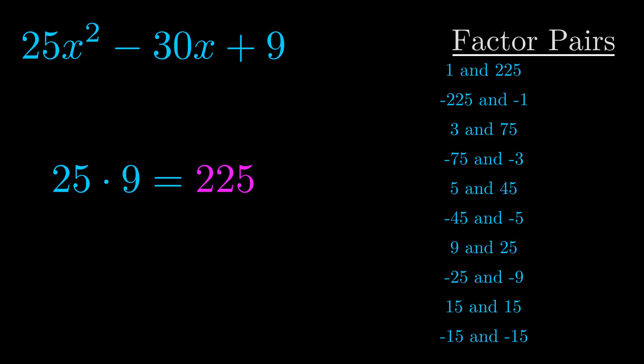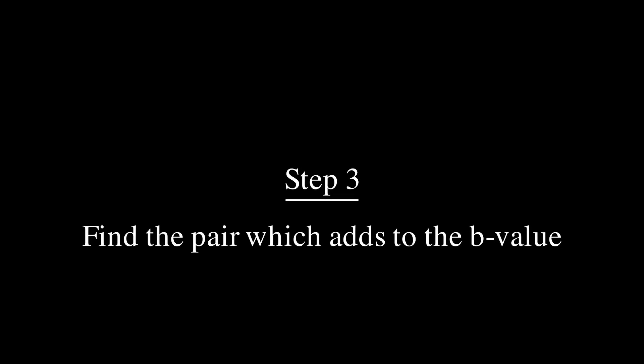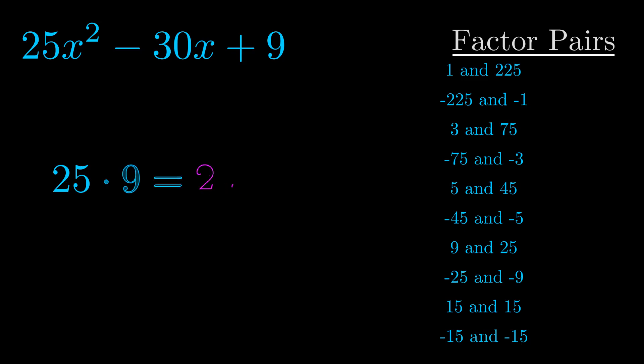Now once you have these factor pairs the goal is to find which of these pairs adds to the b value. The b value is the coefficient on the x term. That's the middle term, the one that we haven't done anything with yet. And really this is the only factor pair that we need.